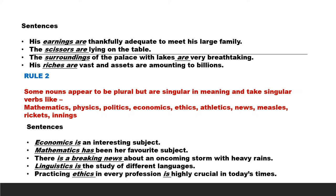Rule 2. Some nouns appear to be plural but are singular in meaning and take singular verbs, like mathematics, physics, politics, economics, ethics, athletics, news, measles, rickets, innings. These noun words appear to be plural but they are in general singular and they also take singular verbs.